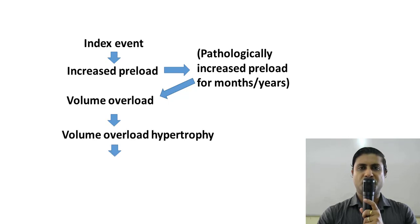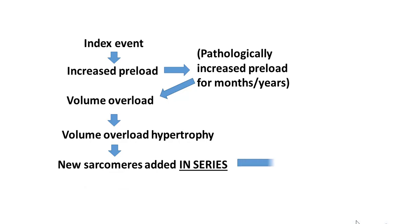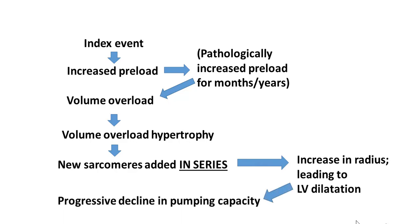In volume overload hypertrophy, there was a serial addition of sarcomeres, leading to dilation of the left ventricle with an increase in radius. We explained how, on the basis of the law of Laplace, this led to a progressive decline in the pumping capacity of the heart. When the pumping capacity declines, the residual amount of blood present in the ventricle at end-diastole goes up, which leads to an increase in preload — and in this way, the vicious cycle continues.